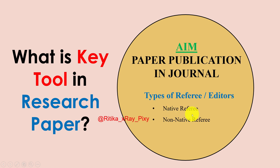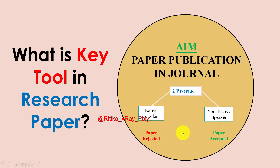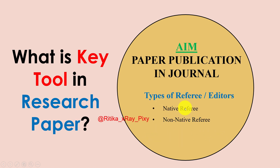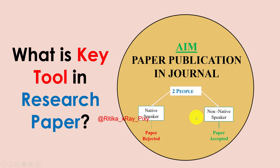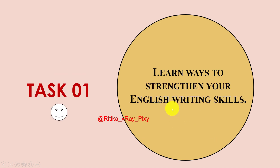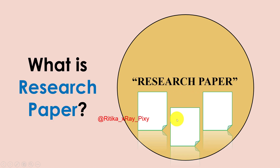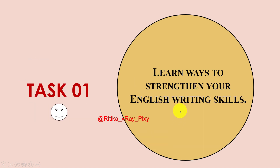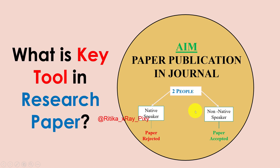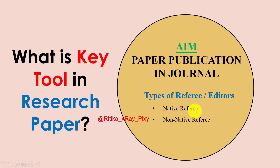We need to write in such a way that both referees are satisfied. To improve writing skills, you need to understand how people read. Use clear language, avoid complicated language, and write the research paper in such a way that even a non-expert or less experienced person can understand it.